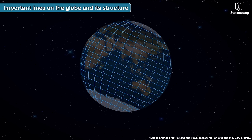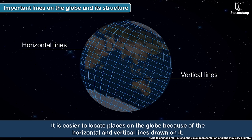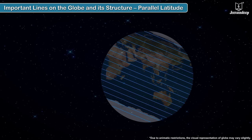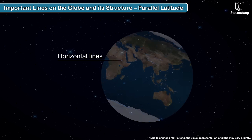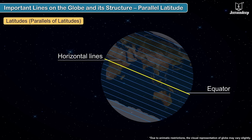Important lines on the globe and its structure. It is easier to locate places on the globe because of the horizontal and vertical lines drawn on it. When we look at a globe, we find horizontal lines drawn on it running parallel to the equator.